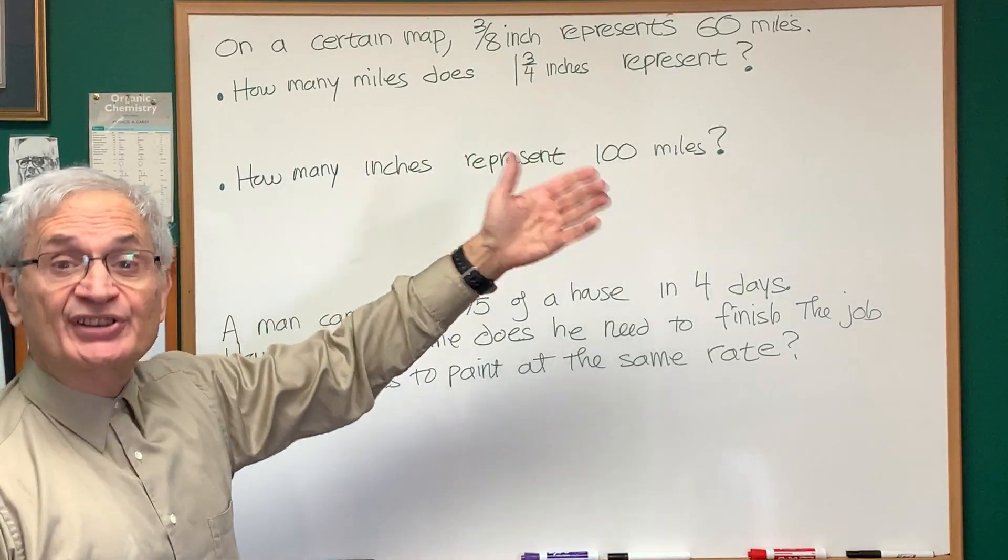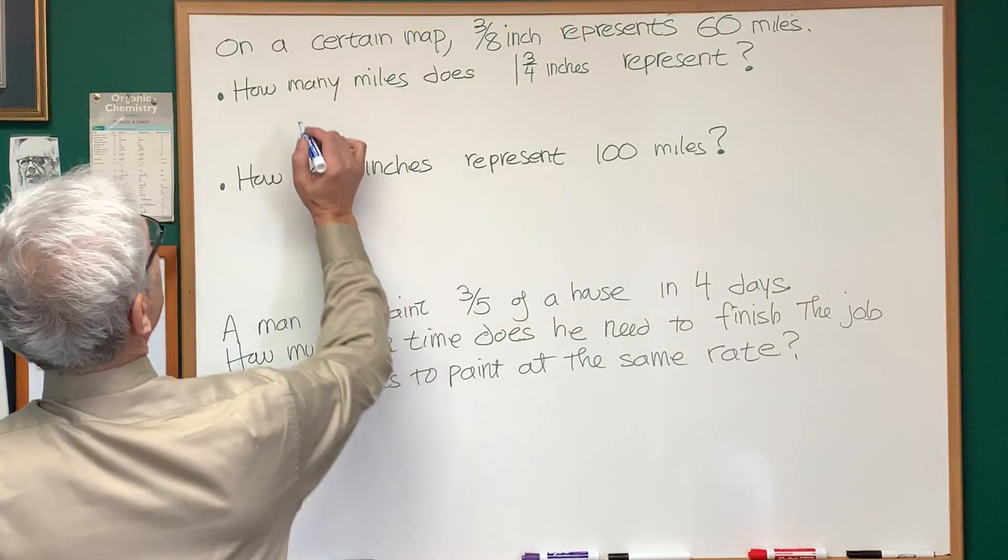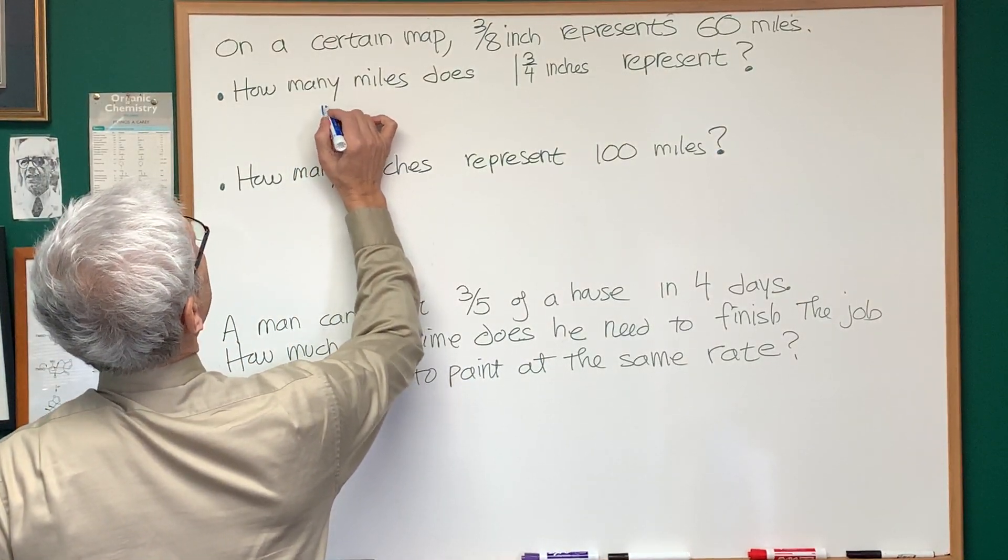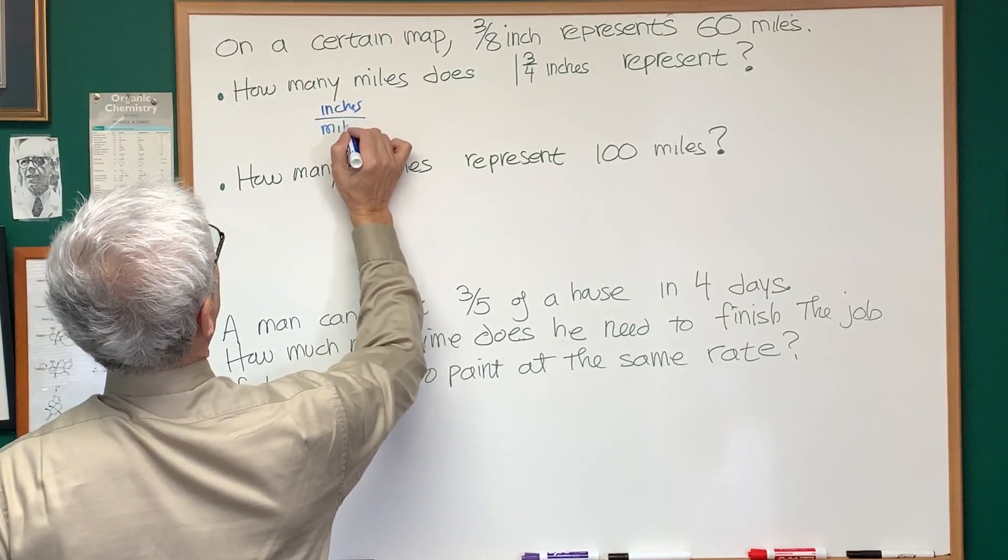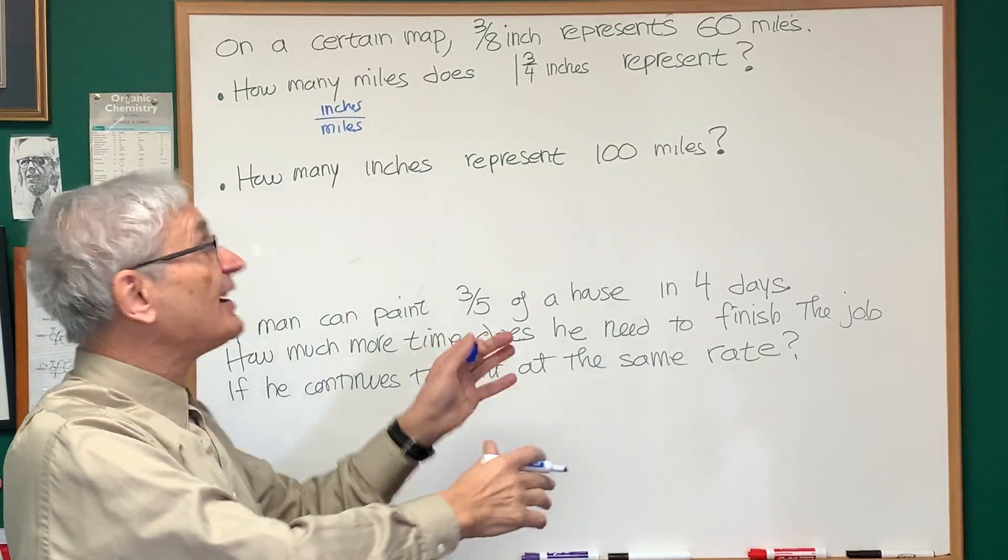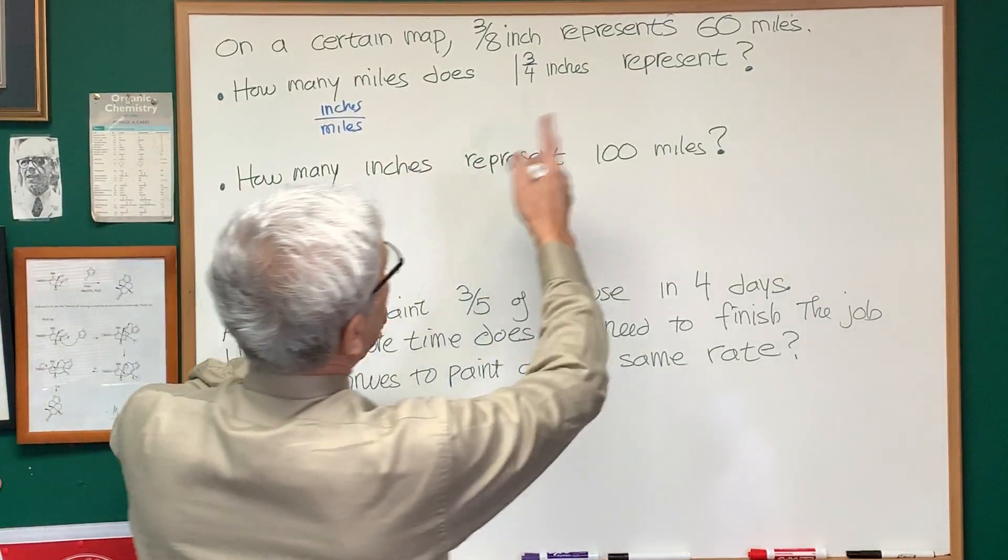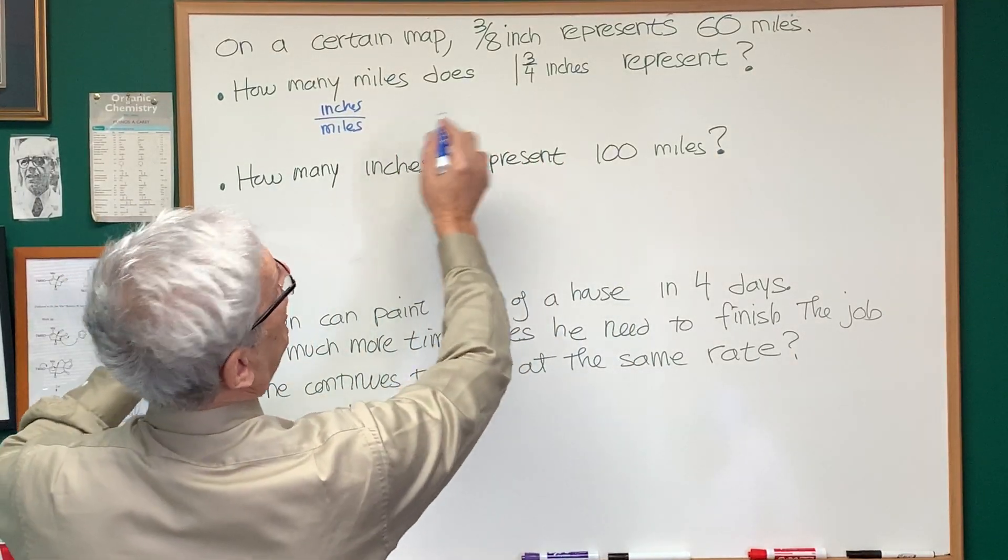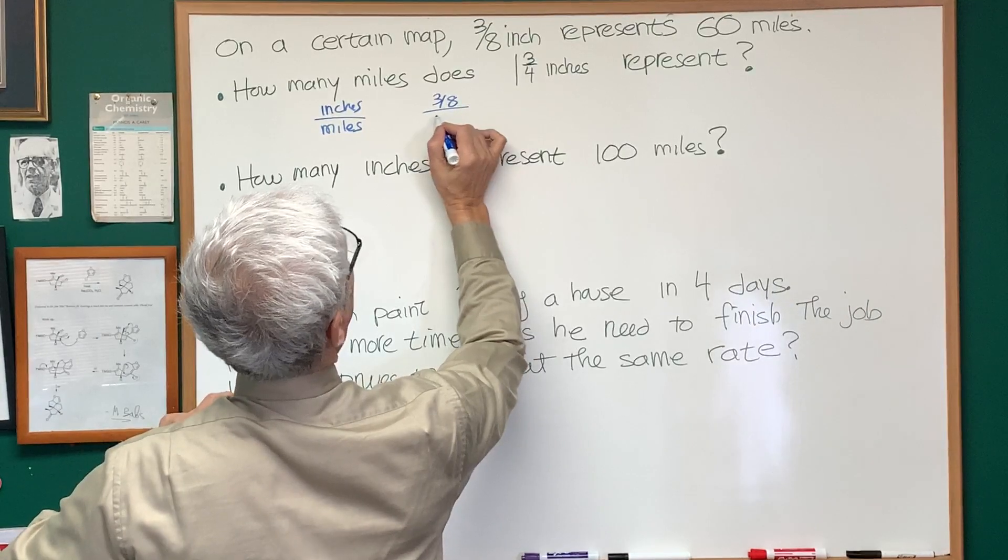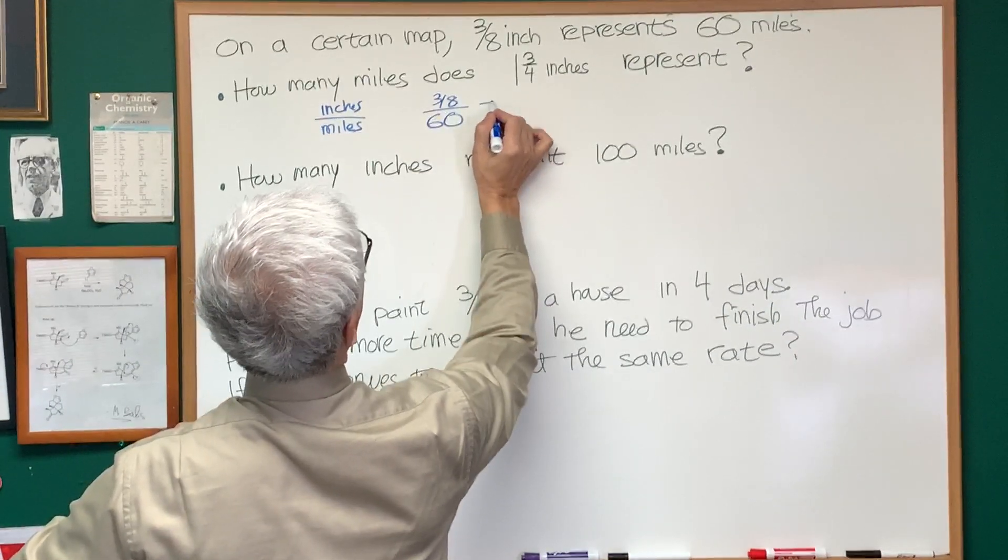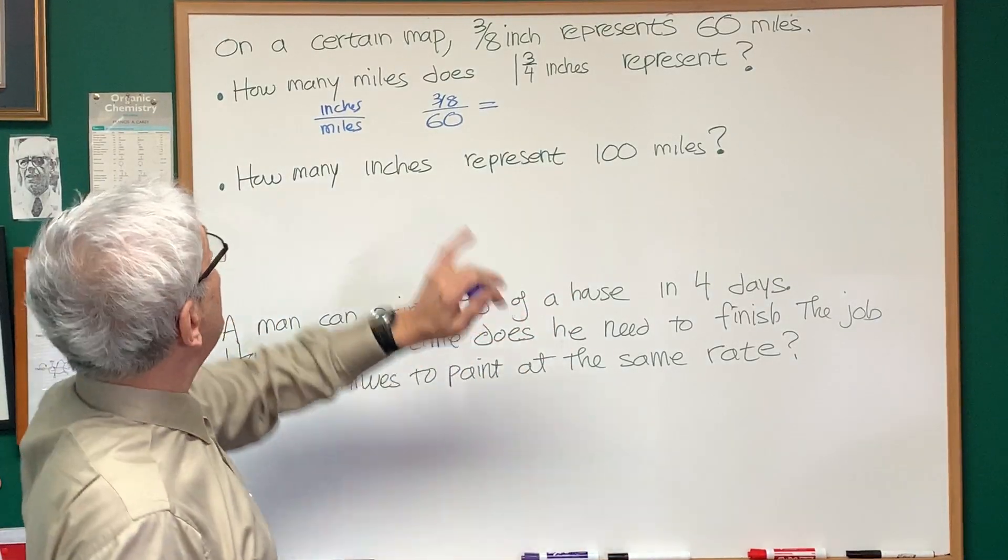Okay, what we want to do is set up a ratio and proportion, and let's be explicit as to what the ratio is going to be. Let's set up a ratio of inches to miles, and once that's established, we will use that as the pattern for the rest of the problem. Now, three-eighths of an inch represents 60 miles, so we have the fraction three-eighths of an inch is to 60 miles. This is going to be in the same proportion as other measurements on the map.